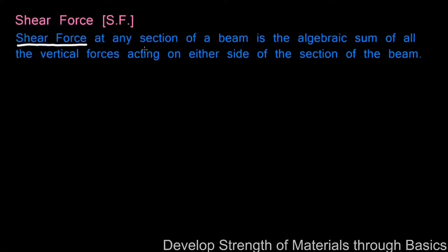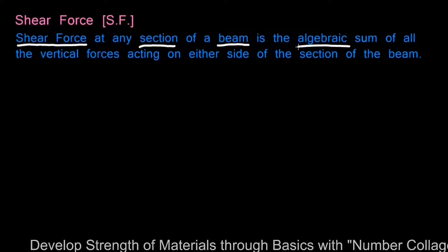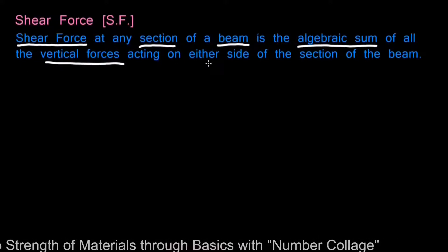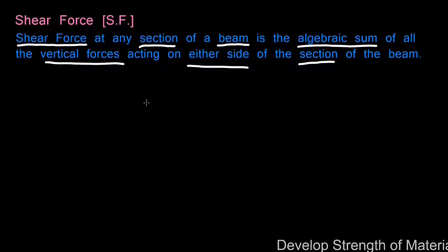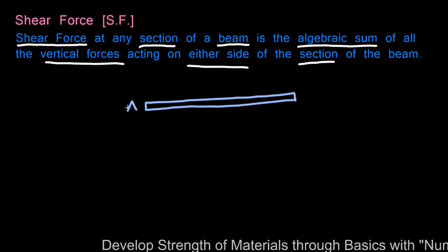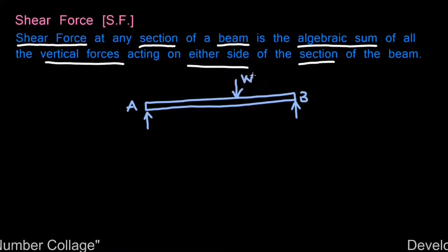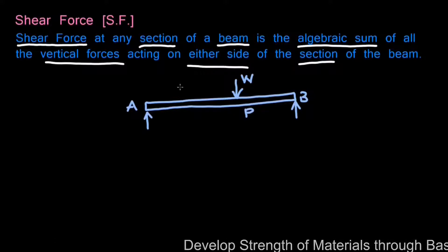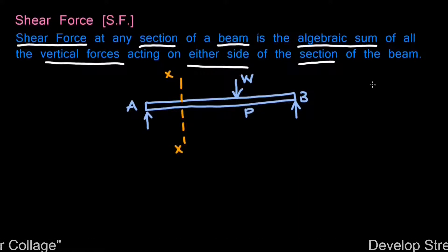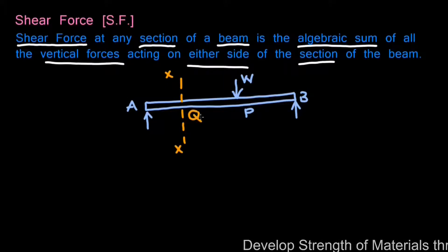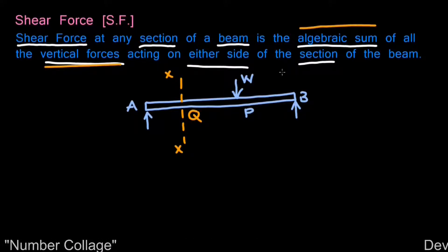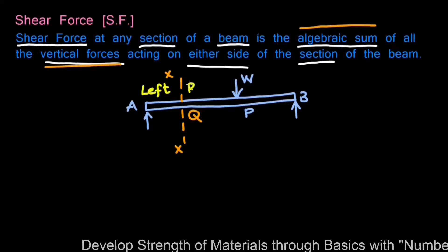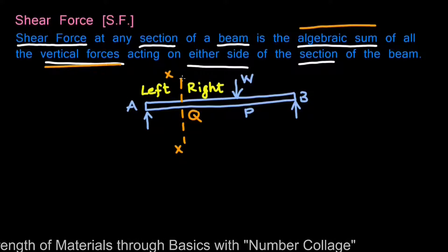Let us understand the formal definition of shear force. Shear force at any section of a beam is the algebraic sum of all the vertical forces acting on either side of the section. Suppose there is a simply supported beam AB acted upon by a vertically downward force W at point P. If we consider a section XX of the beam, then the shear force at point Q is the algebraic sum of all vertical forces acting on either side of that section.